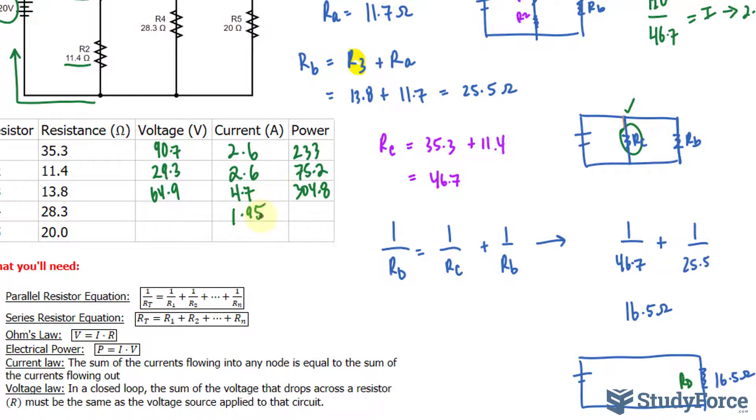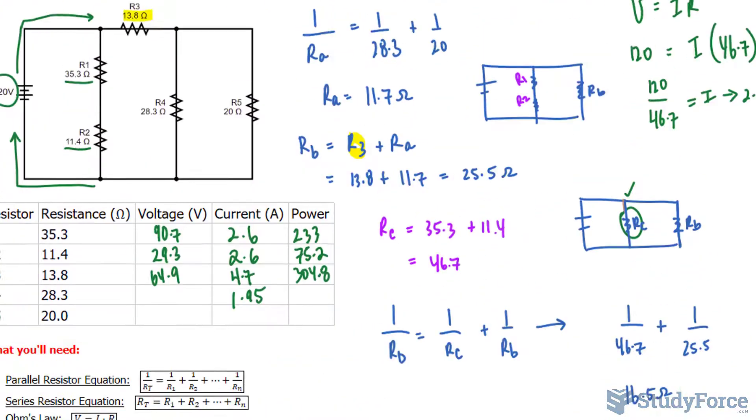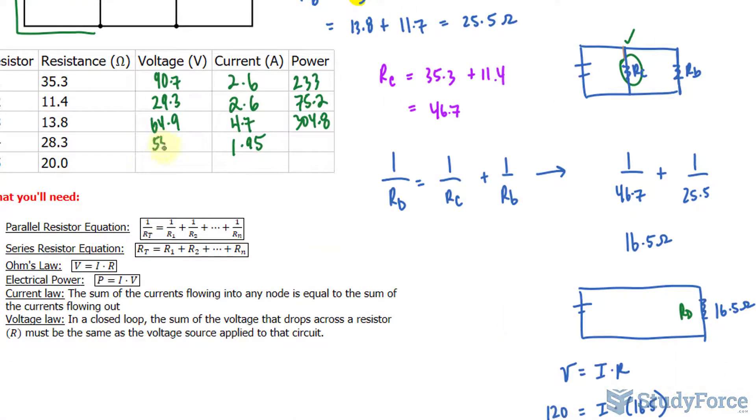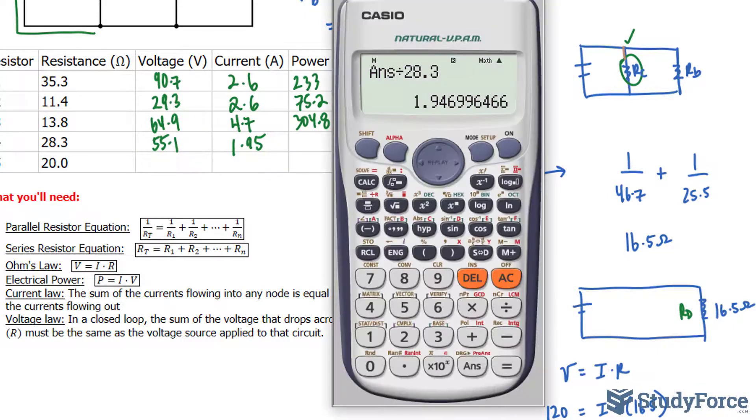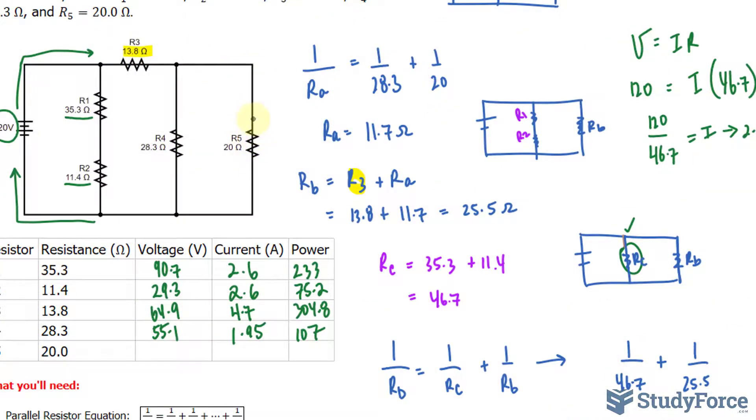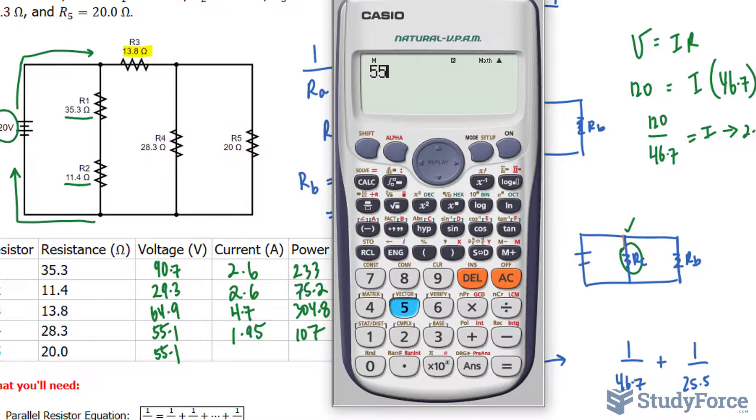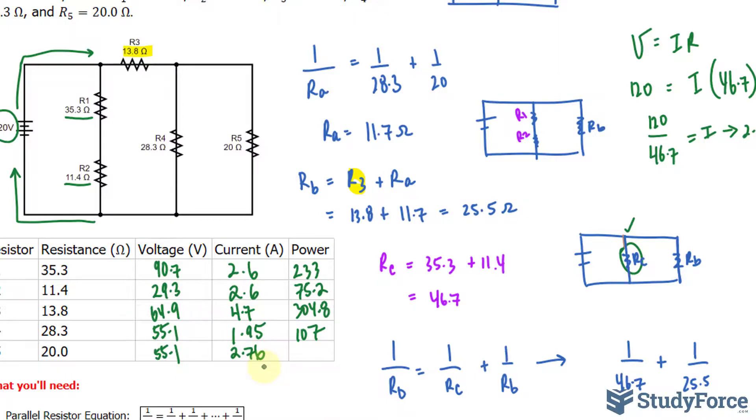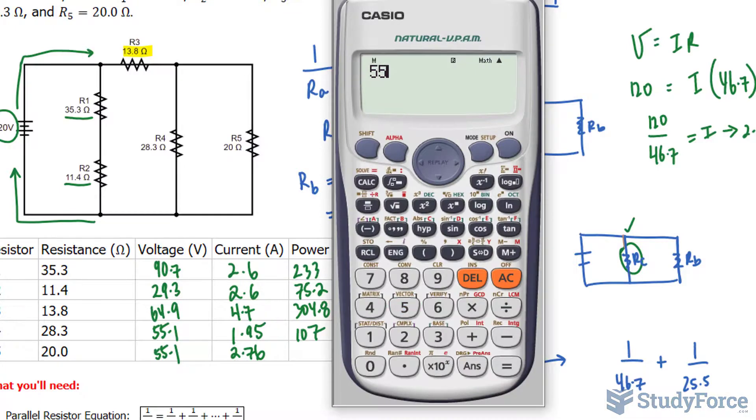The voltage we found is 55.1. Multiplying these out gives us roughly 107 as the power. The voltage across this resistor will also be 55.1. We take 55.1 and divide it by 20, and we get a current of 2.76. Multiplying these to get the power: 55.1 times 2.76 is 152.